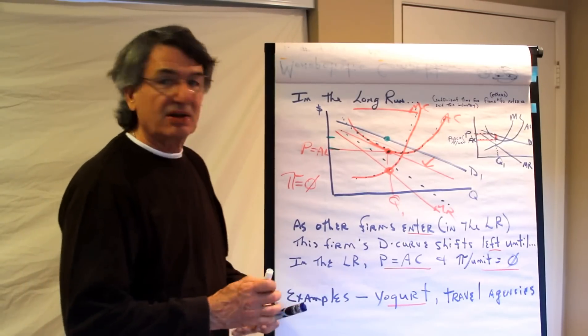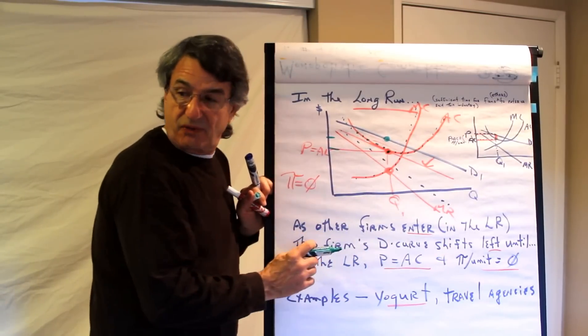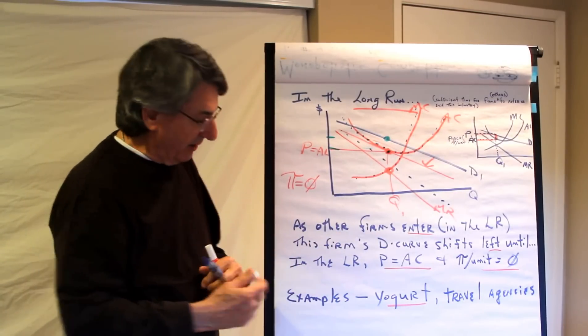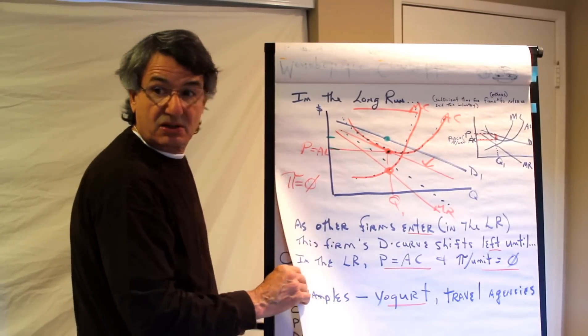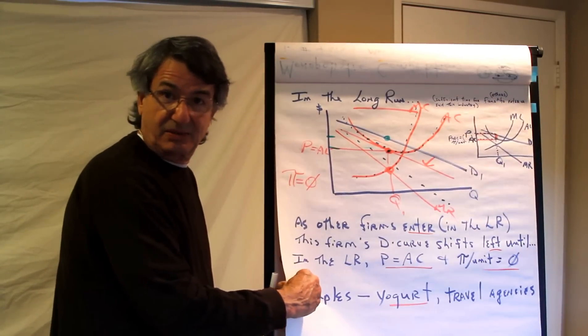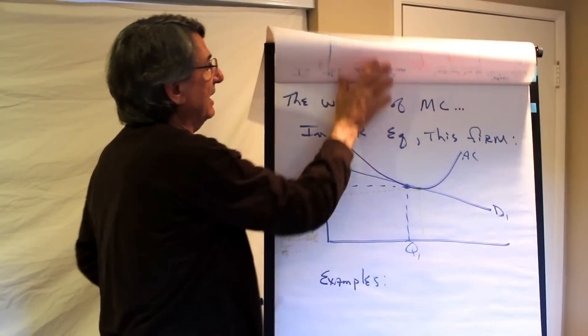did a yogurt store open up on every second street corner around Southern California? And all of a sudden, could the Yogurtland guy sell as many cups of yogurt at the same price as before? Or did that guy's demand curve start shifting inward? And it did. And all of a sudden, that profit disappeared. So if you start a yogurt store now, it's not likely you're going to make any real money.